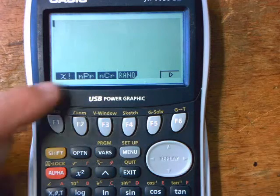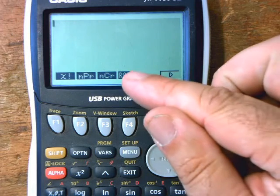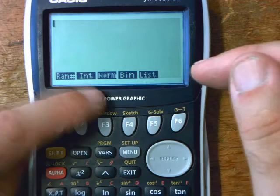Now can you see you've got various options and you've got random. So what you're looking for is this random one. So you press that one and now you've got a list and you've got random hash int, norm, bin, list.